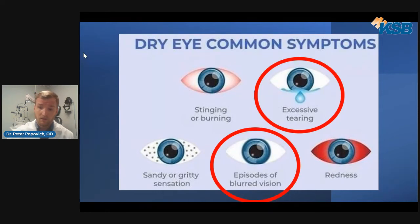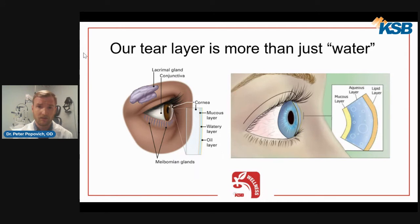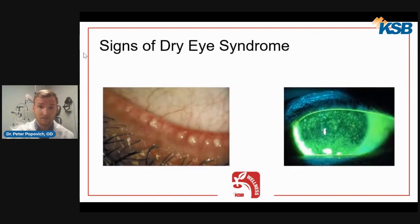Common symptoms include dryness, stinging, burning, and a gritty sensation, but other common symptoms include watery eyes as well as fluctuating blurry vision. That's because the tear layer on the front of the eye is not in good quality. Our tear layer is not just water — there are actually three different components: an oil layer, or lipid layer, that coats the very front of the tear layer; a watery layer that fills the middle; and then a mucus layer.